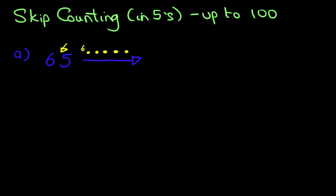65, 66, 67, 68, 69, and 70. That is our answer, 70. The number after 65 when counting in fives is 70.